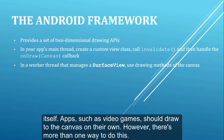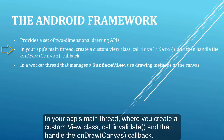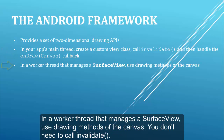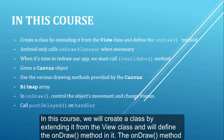However, there is more than one way to do this. In your app's main thread, where you create a custom view class, call invalidate and then handle the onDraw callback. In a worker thread that manages a SurfaceView, use drawing methods of the canvas — you don't need to call invalidate.